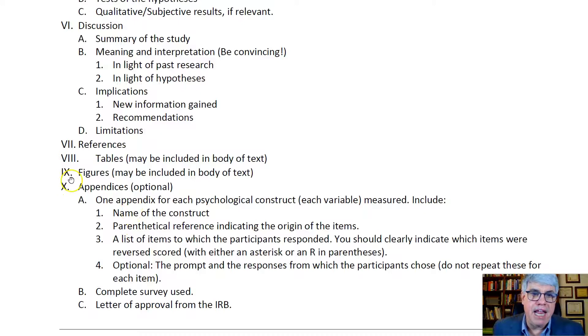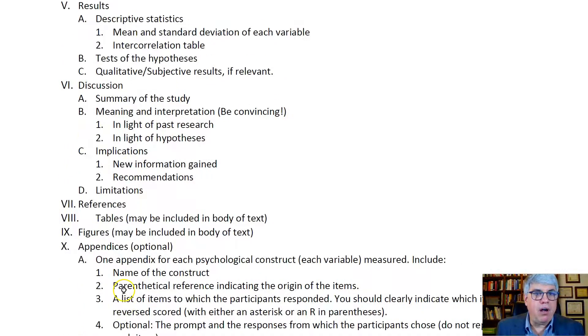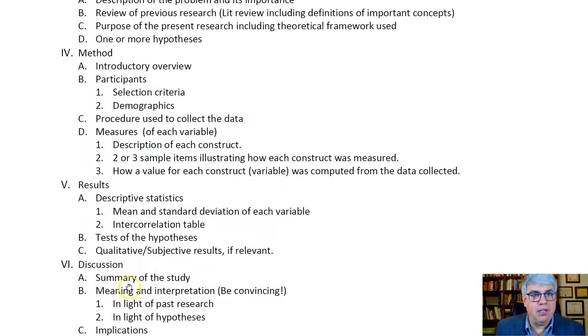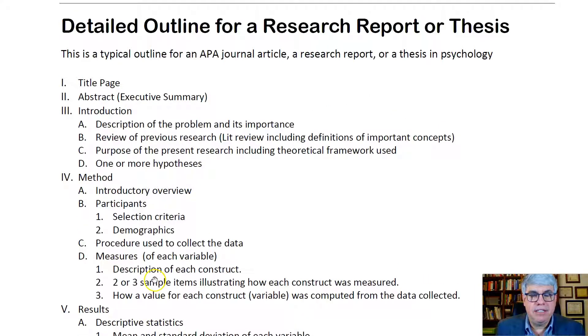Your appendices might actually be longer than the rest of your paper. If the survey is eight pages long and you've got six variables, we're at about 15 pages there. The appendices can get long pretty quickly. So this is an overview, a detailed outline of a typical APA journal article, a research report, or your thesis. That's it.